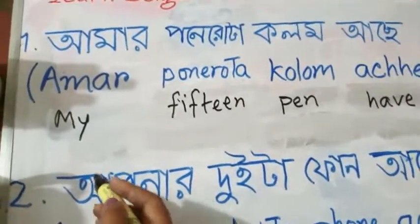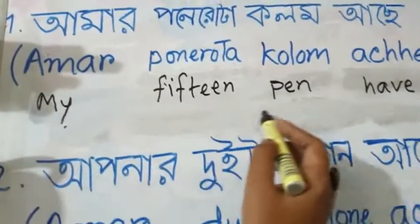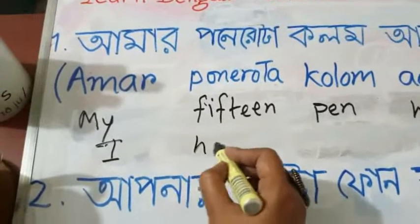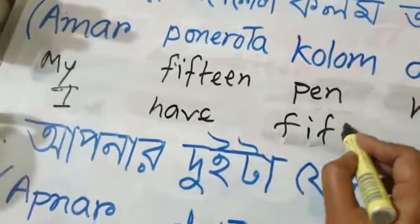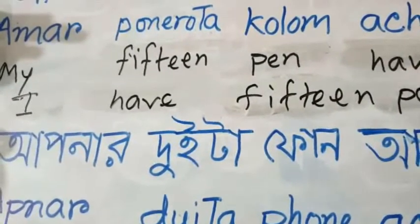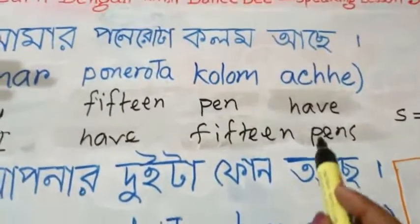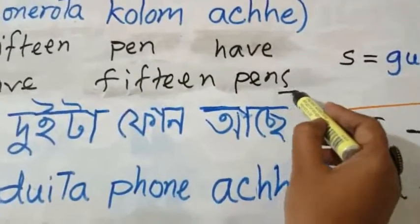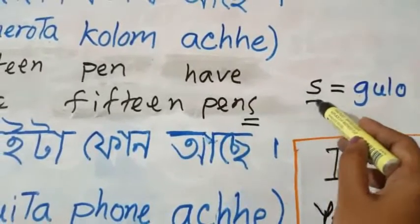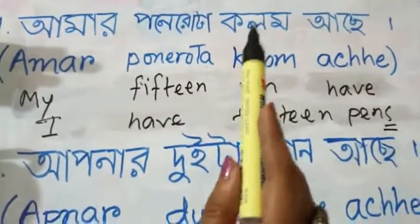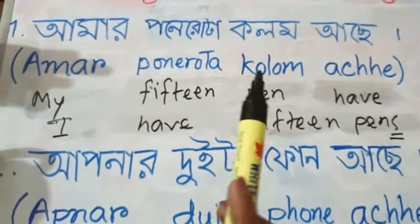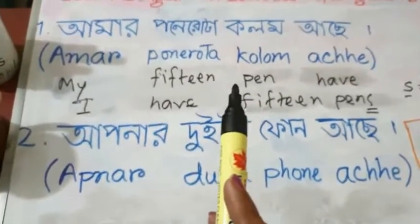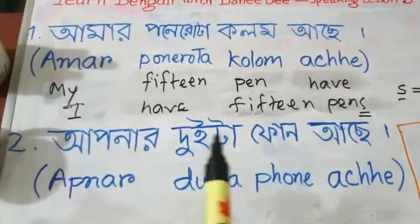So 'my fifteen pen have' — you are smart enough to know that it means 'I have fifteen pens.' Now, if you want to know why I am using 'kolom' instead of 'kolom gulo' — 'gulo' is the plural sign equivalent to the English 's' — the reason is explained in the previous lesson. For now, just memorize the first sentence: 'amar ponerorta kolom ache' means 'I have fifteen pens.'